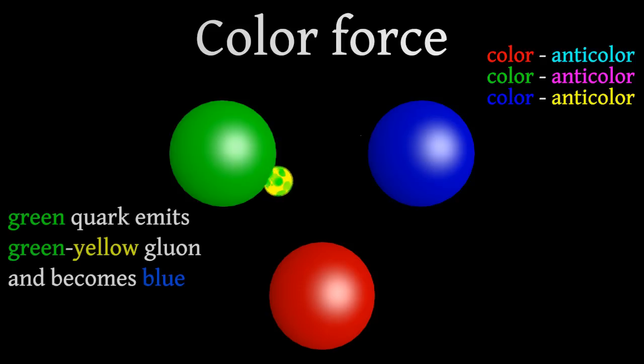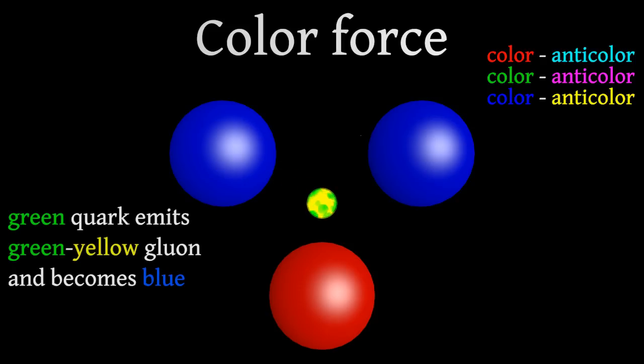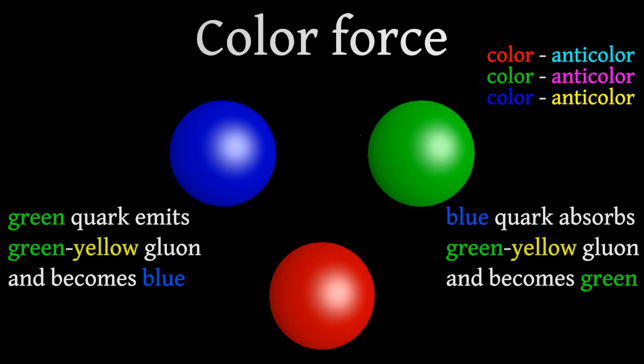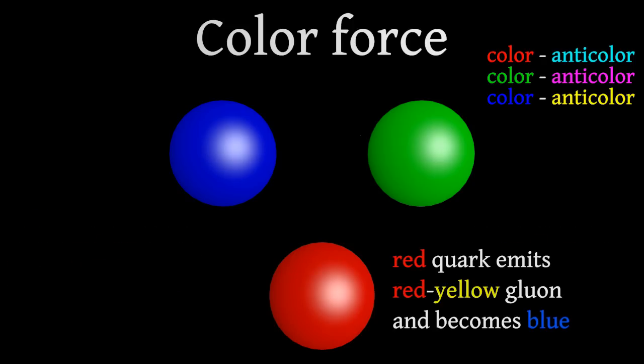A green quark may emit a green-yellow gluon and become blue. The green-yellow gluon may be absorbed by a blue quark, and it becomes green. There are many such possibilities.